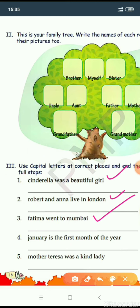Number four: January is the first month of the year. J of January will be capital because January is the name of a particular month. January is the first month of the year. Full stop. Number five: Mother Teresa was a kind lady. Mother Teresa is a name of a particular person, so it's a proper noun. We write capital M for Mother and capital T for Teresa. Mother Teresa was a kind lady. Full stop.